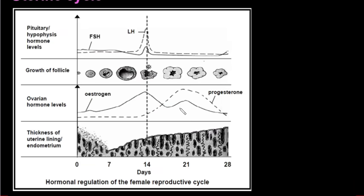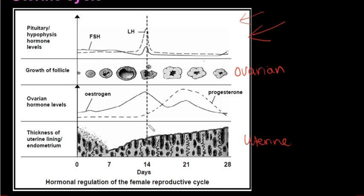With regards to the uterine cycle, this graph contains both the ovarian cycle and the uterine cycle — actually from a previous exam paper, so interpreting this type of graph is important. The ovarian cycle is shown on top, and the uterine cycle below represents the endometrial lining. The cycle is numbered from day 0 to day 28. Day 0 to day 7 is generally when menstruation occurs, lasting four to seven days.